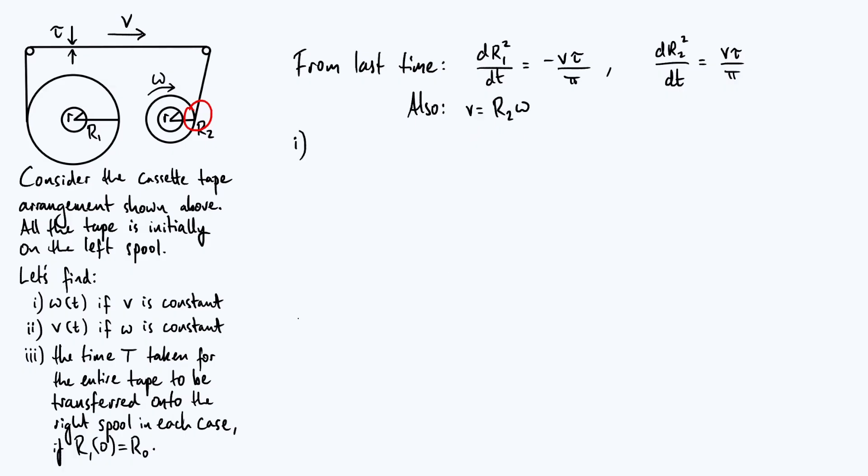So let's start working on case one, where v is constant. If we want to know omega as a function of time, we need to know R2, because this equation links R2 and omega together. So we better solve this differential equation for R2 squared. Fortunately, that's very easy to do if v is constant, because the right-hand side is just a constant. If you just integrate both sides with respect to time, the left-hand side will just be R2 squared. The right-hand side, you're going to have v tau over pi multiplied by time T, and you're going to have some constant of integration, which I will call C.